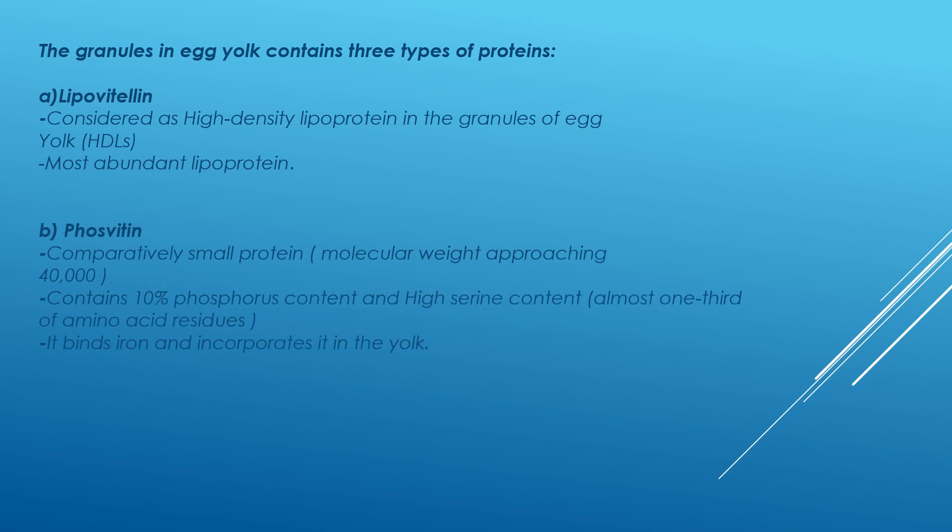The granules in egg yolk contain three types of proteins: low-density lipoprotein, lipovitellin, and phosvitin. Lipovitellin is considered a high-density lipoprotein in the granules of egg yolk — also called HDL — and is the most abundant lipoprotein. Phosvitin is a comparatively small protein in the yolk granules, unique because of its high serine content and its function of binding iron and incorporating it into the yolk.